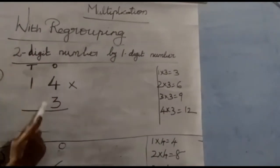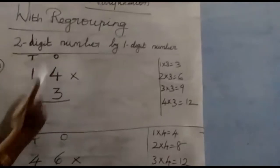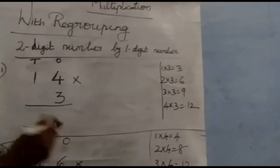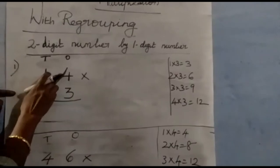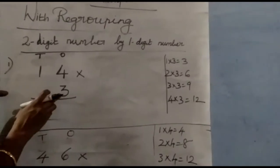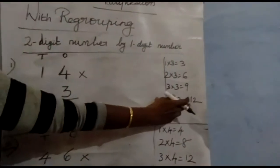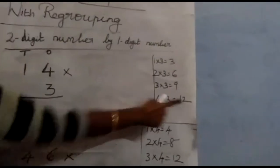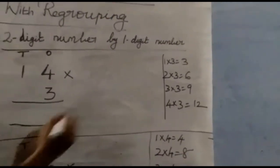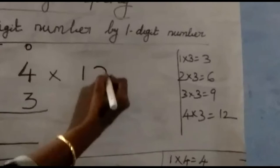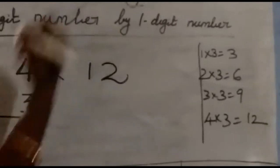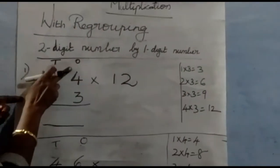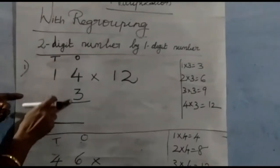Start to multiply from the ones place. Four threes are twelve. Twelve is a two-digit number, so you can't write it directly here. Write it on the side of the sum.